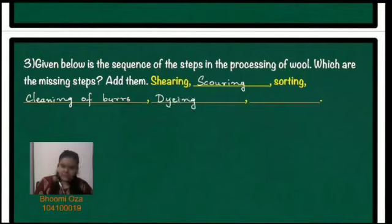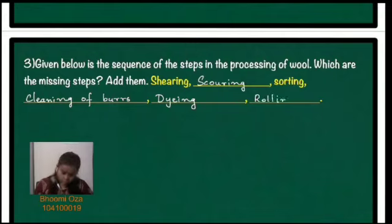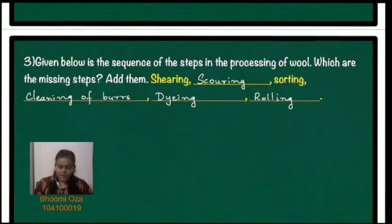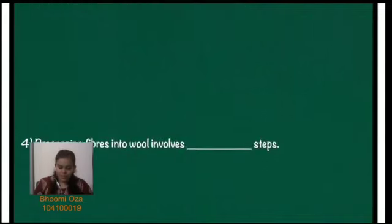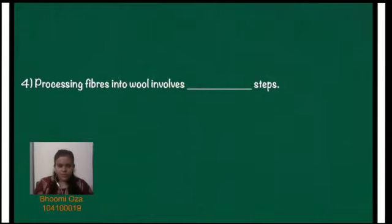The fifth step is dyeing, and the last step is rolling. So in all, there are six steps involved in the processing of wool. Processing fibres into wool involves six steps.